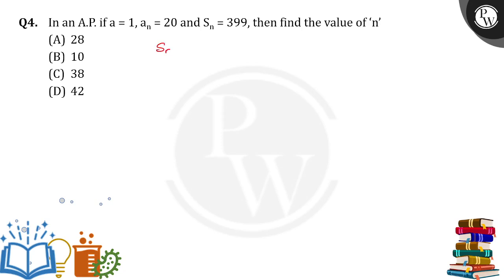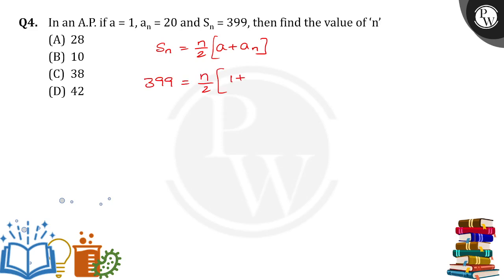So here the SN formula we know is N by 2 into (A plus AN). So SN is given as 399, which equals N by 2 into A value 1 plus AN value 20.